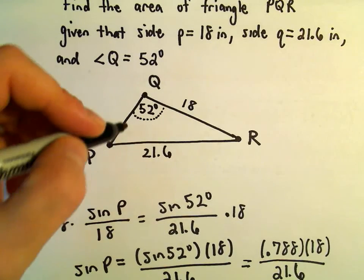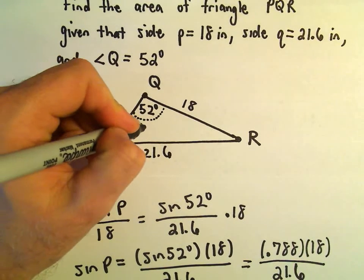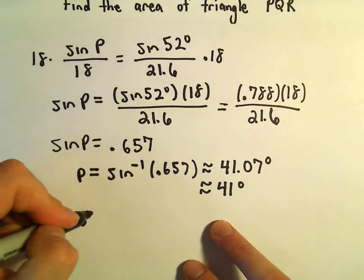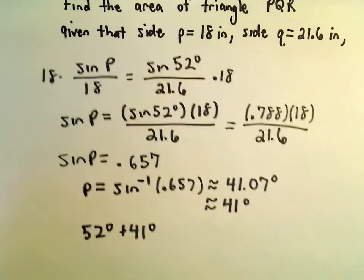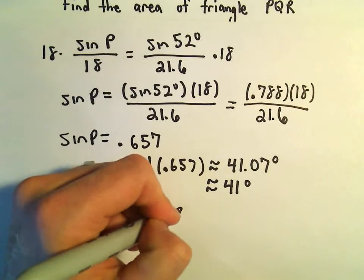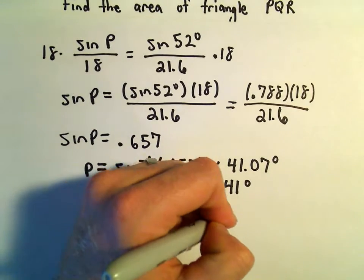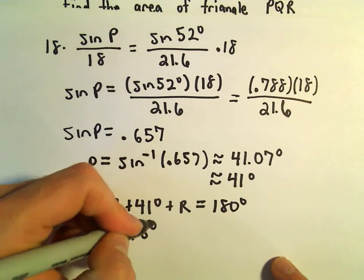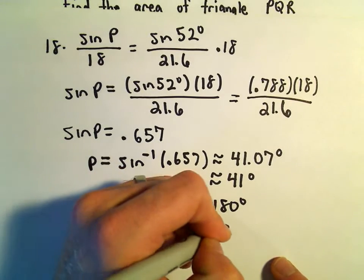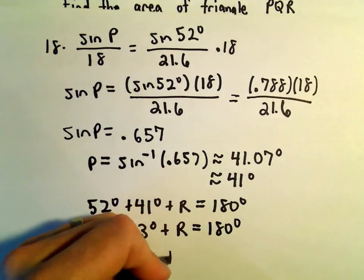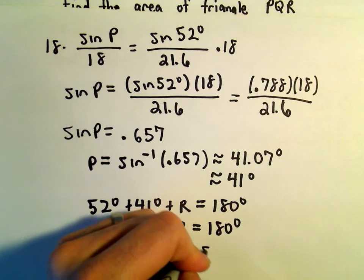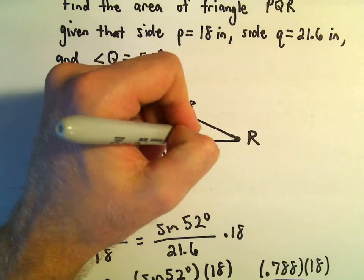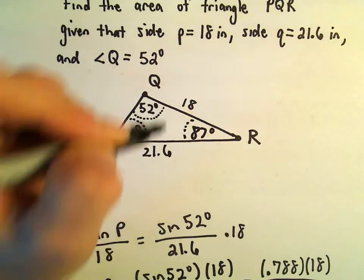So now we can go back to our triangle. We know that angle P here is now 41 degrees. We can add these together, right? We can do 52 degrees plus 41 degrees, and then whatever angle R is. When we add all those up, we've got to get 180 degrees, since they're all inside of a triangle. So that's going to be 93 degrees plus angle R is 180 degrees. We can always subtract 93, and if we subtract 93, I believe we should be left with 87 degrees.